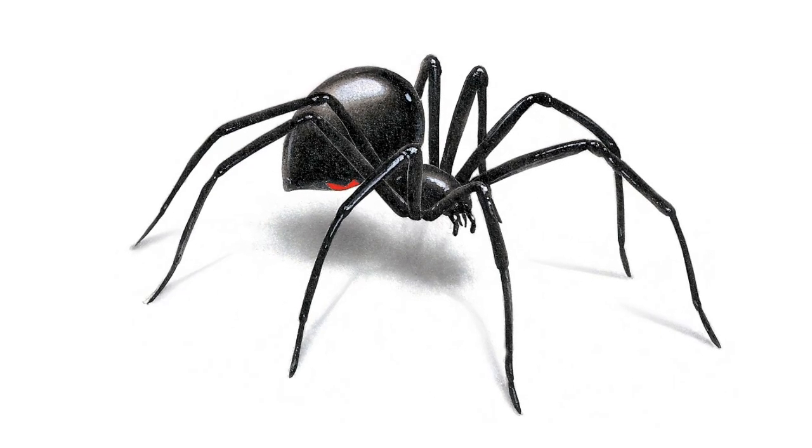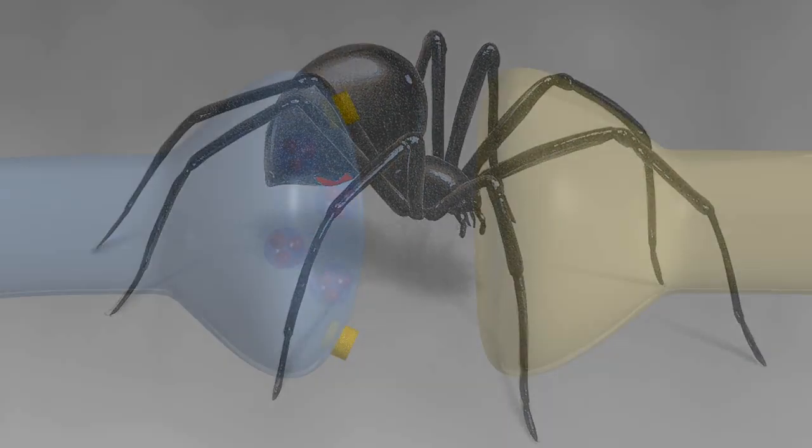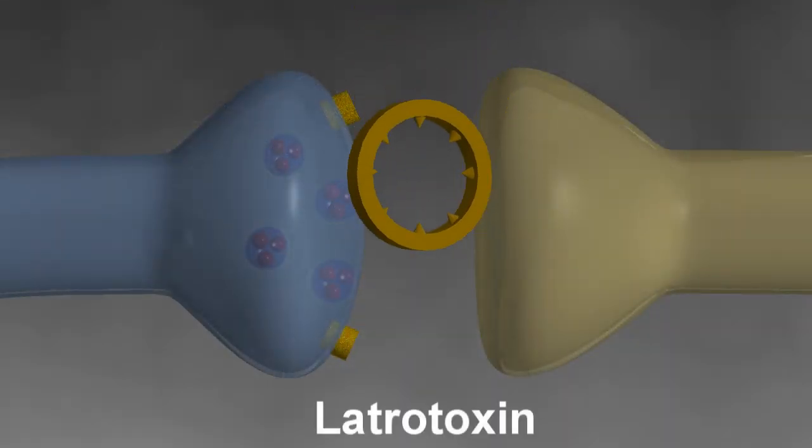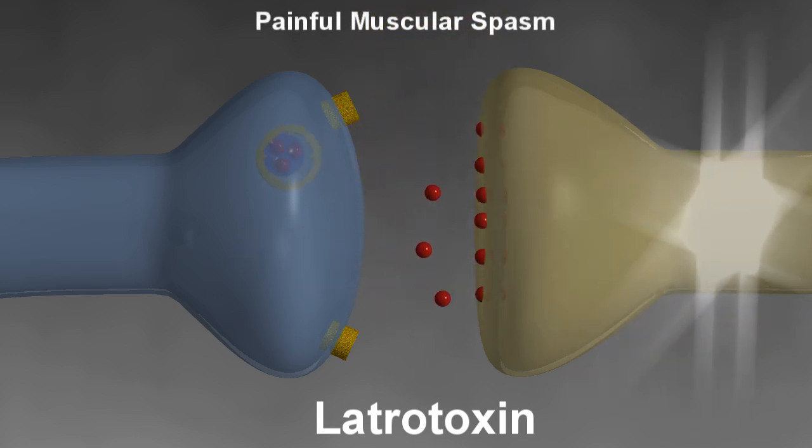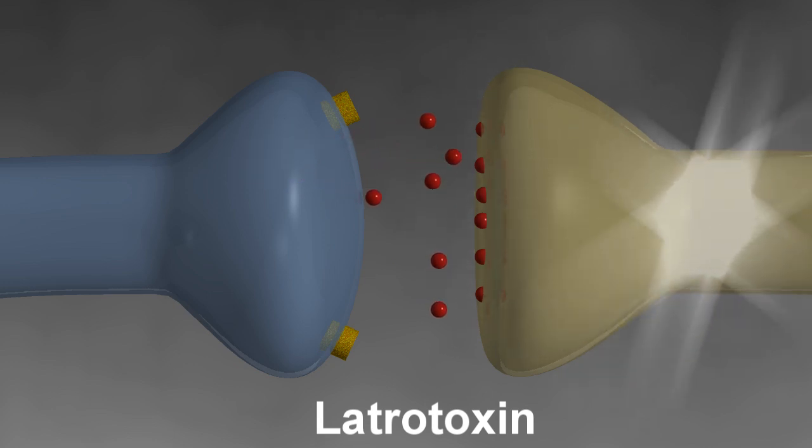The bite from the black widow spider, on the other hand, has the opposite effect causing a massive degranulation of the presynaptic vesicles, resulting in severe and painful muscular spasm. Eventually, when the axons are depleted of all their acetylcholine, these patients will experience paralysis in the affected area.